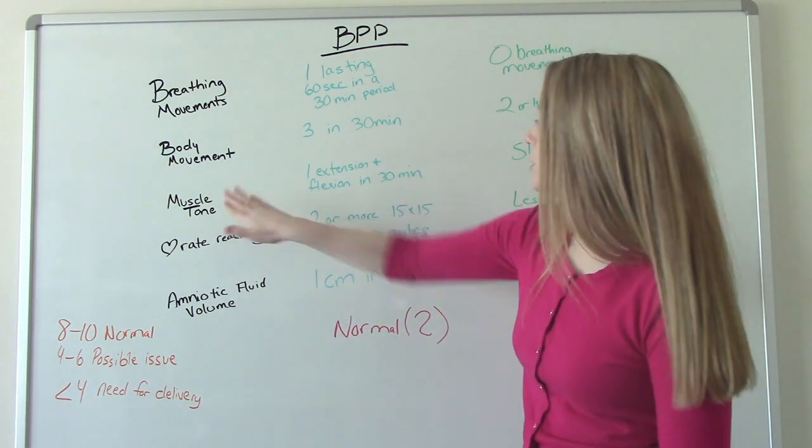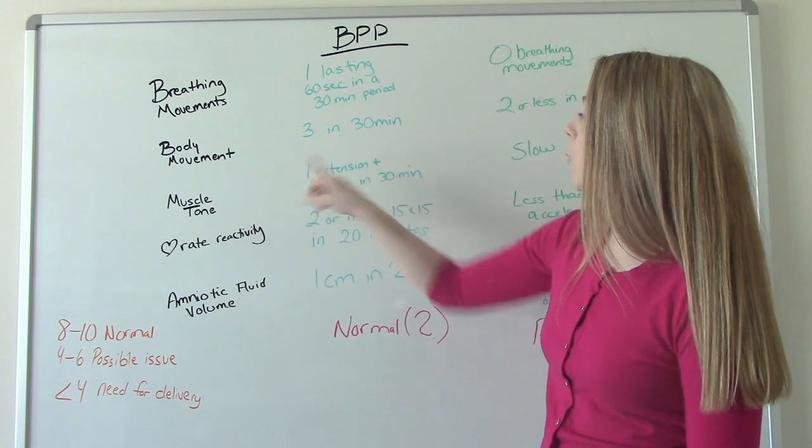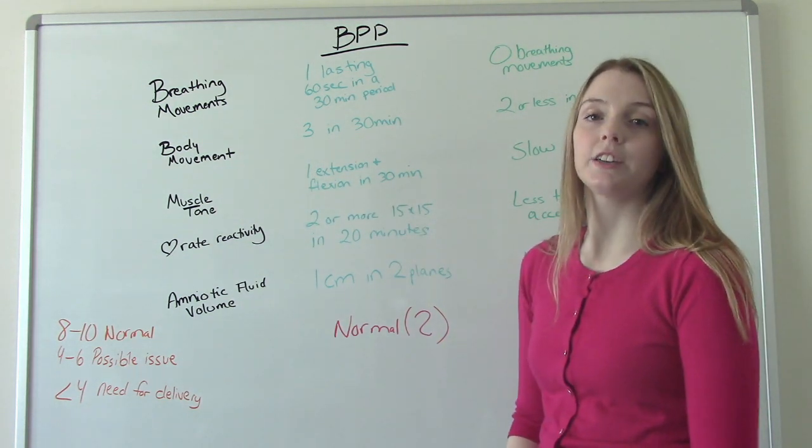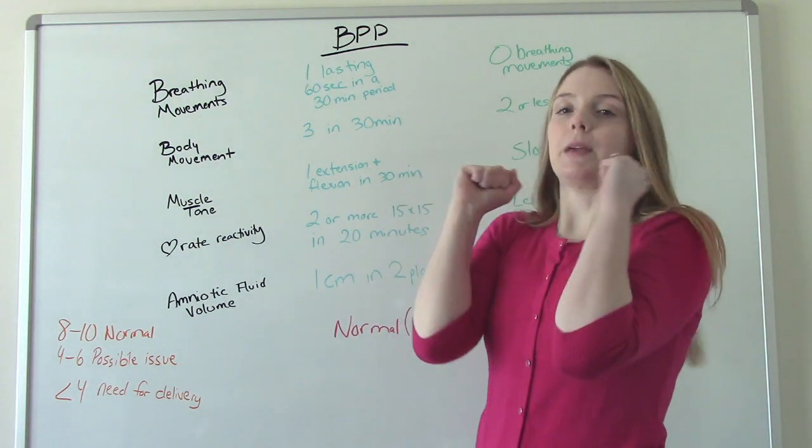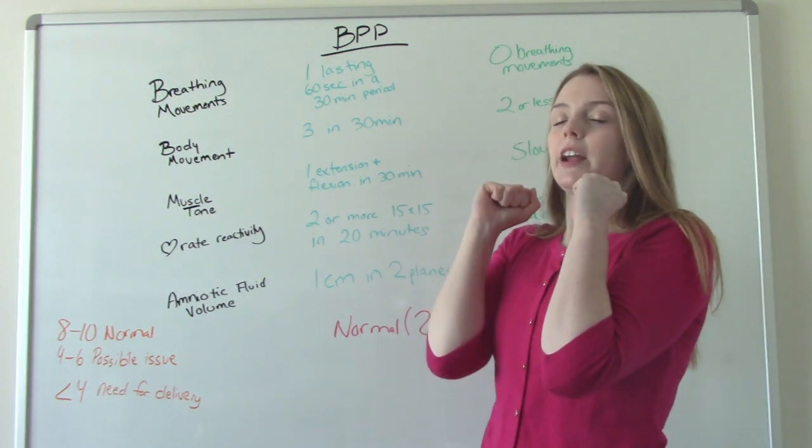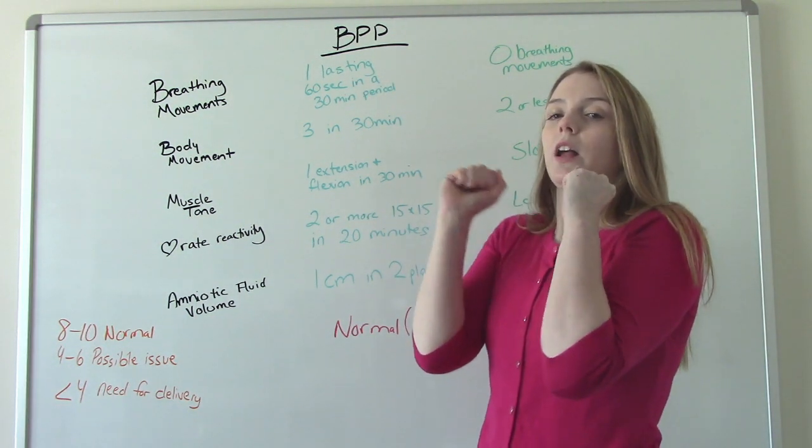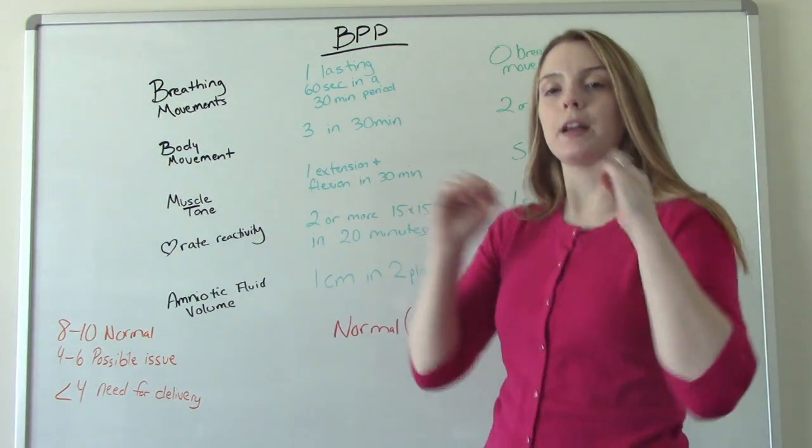Then our muscle tone. They need to have at least one extension inflection in 30 minutes. So what that means is baby's got its normal flexed posture. So they need to have at least one where they're kind of stretching a little bit, maybe stretching their arms or stretching their legs out, something like that.